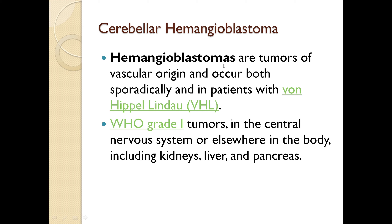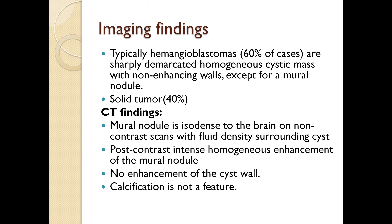A few words about cerebellar hemangioblastomas. Hemangioblastomas are tumors of vascular origin which can occur both sporadically and in patients with von Hippel-Lindau syndrome. These are WHO grade 1 tumors in the central nervous system, or can be seen elsewhere in the body like kidneys, liver, and pancreas. They have typical imaging findings, and in 60% of cases they appear as sharply demarcated homogenous cystic masses with non-enhancing walls except for the mural nodule, and in 40% of cases they appear as solid tumors.